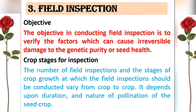The second field inspection is done at the time of flowering. The officer confirms that instructions from the first inspection were correctly followed by the seed producer — checking for remaining pollen shedders, volunteer plants, disease, pests, and weeds. The third field inspection is done after flowering, and the last field inspection is done before harvesting.